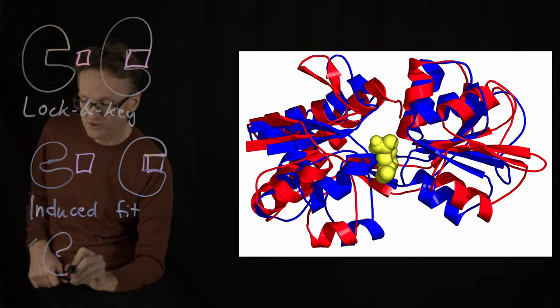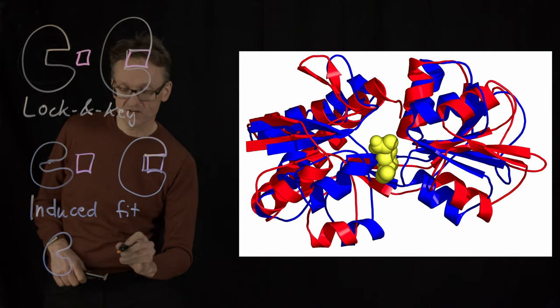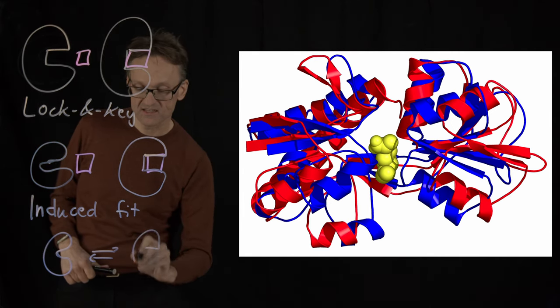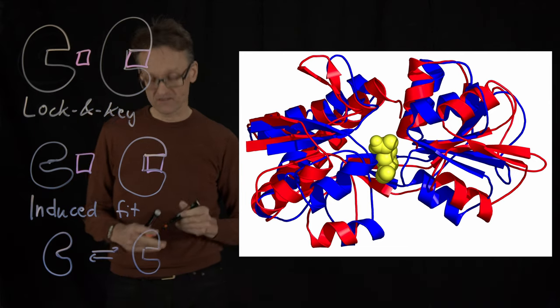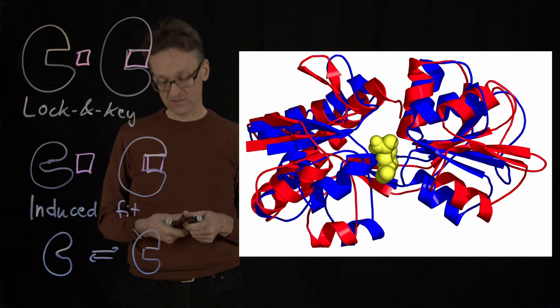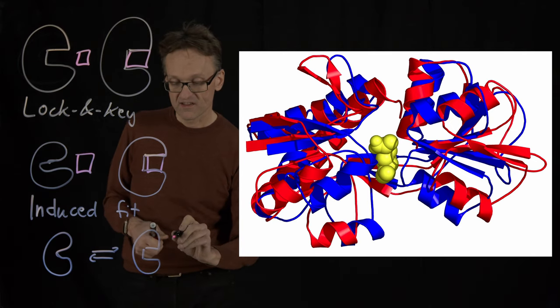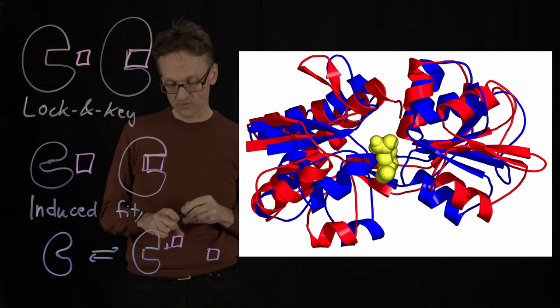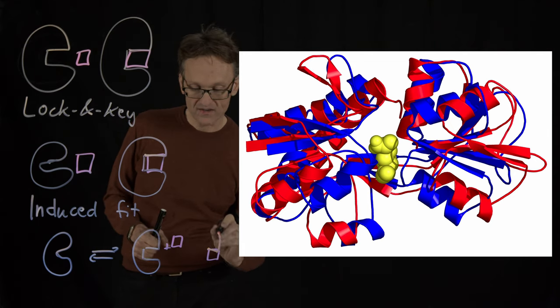So this molecule would sometimes have that circular interior and there is going to be some sort of equilibrium between that state and a state where the binding site looks different. And if I just happen to catch that molecule at a time when the binding site looks different, then I might add my small molecule and have that small molecule then bind to the protein.